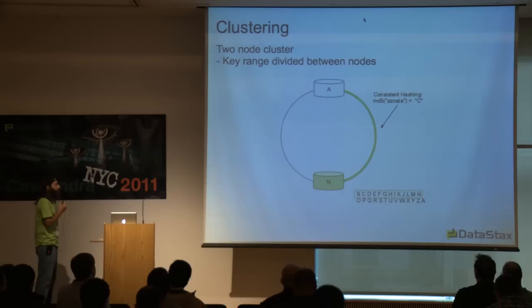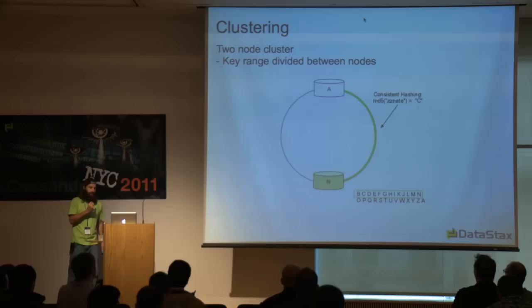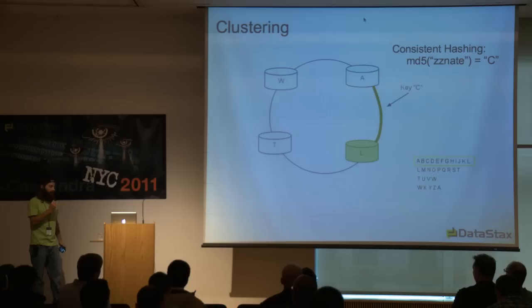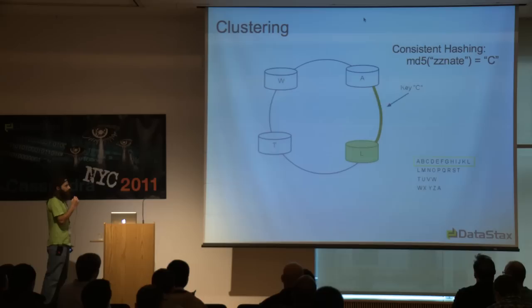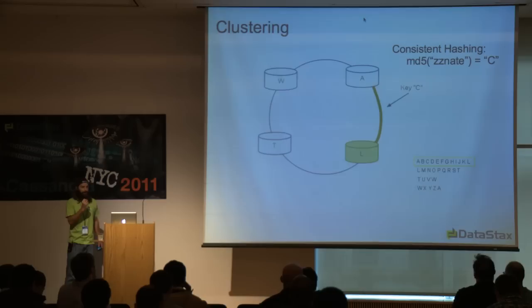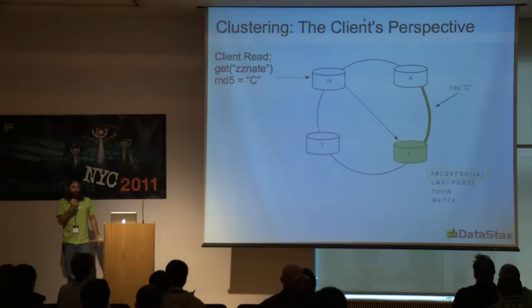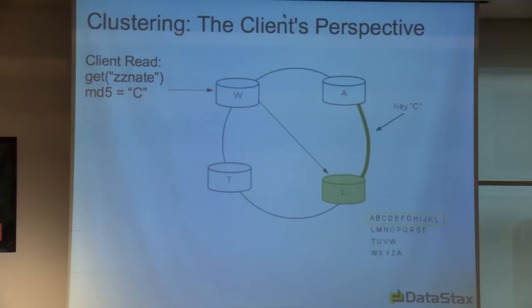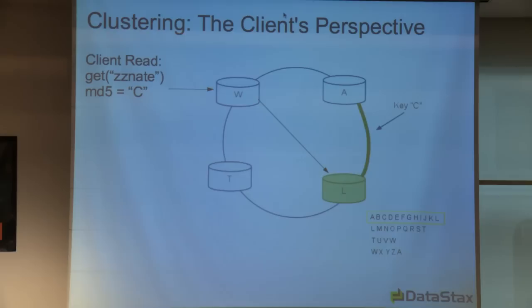With consistent hashing, I know that every time I apply the transform to my name, it's going to get hashed to 'c'. The node that owns that token is node N. In a four-node cluster, the hash space is divided among the four nodes. Node L owns the range of letters up to and including L, so the key C is owned by token L. From the client's perspective, even if a request arrives at node W, node W knows where the data is because hashing is consistent — it coordinates the request off to node L.